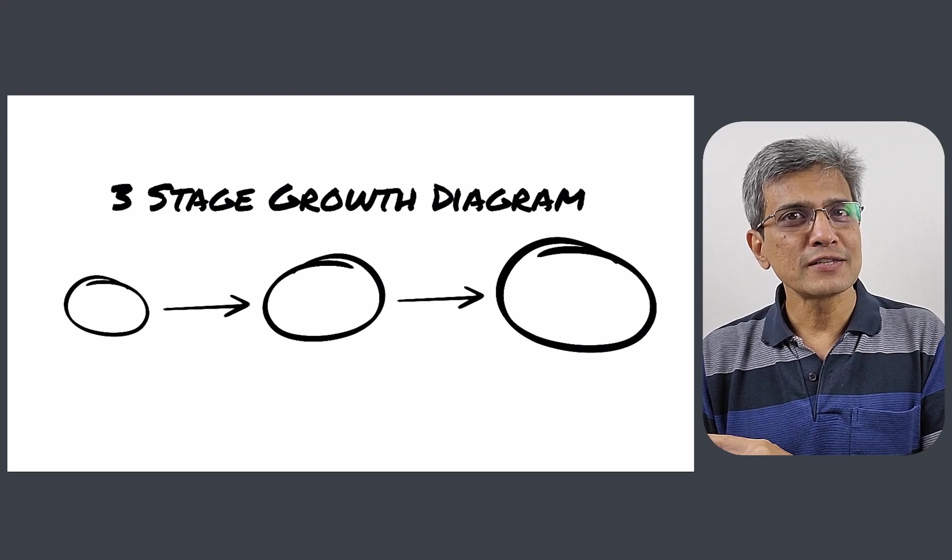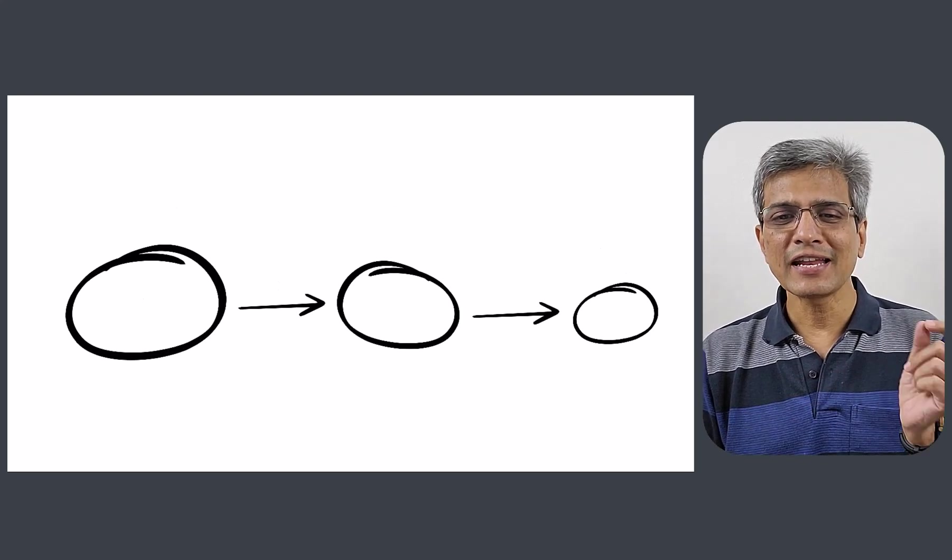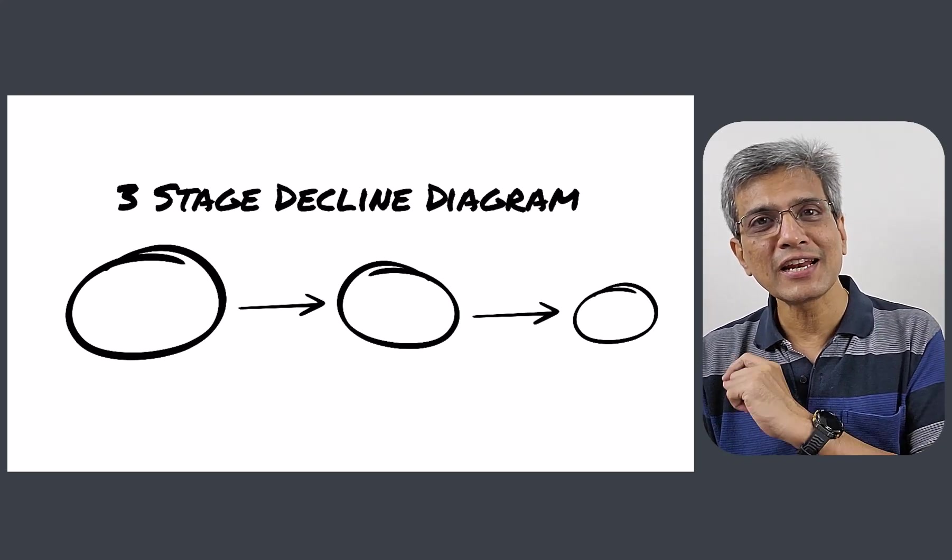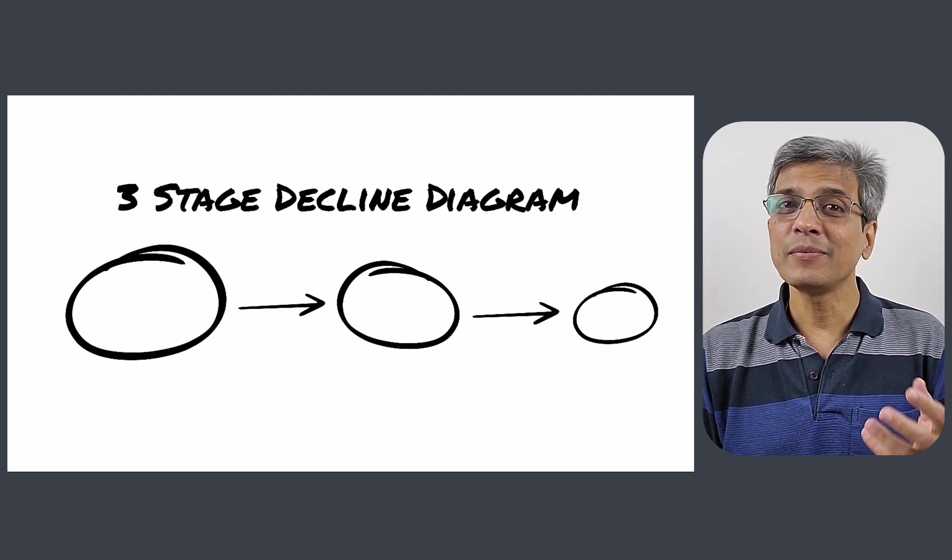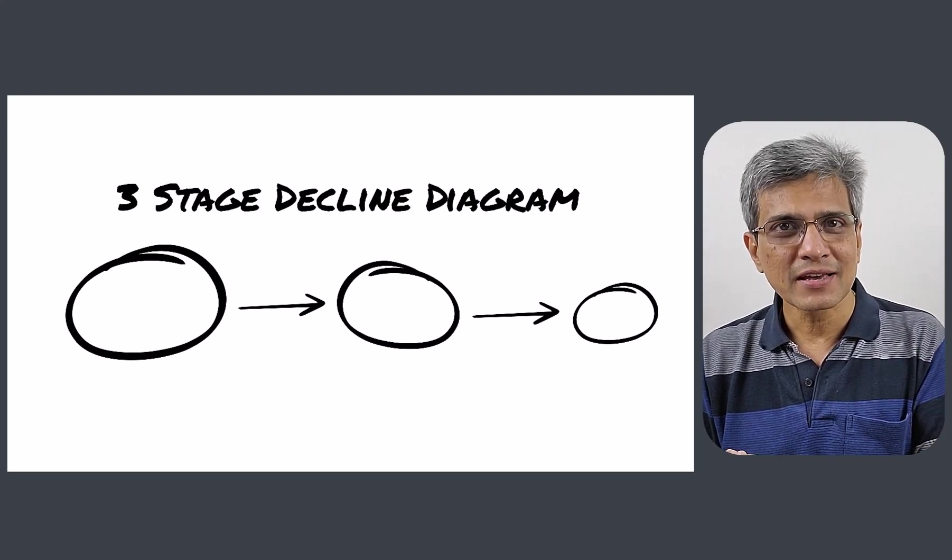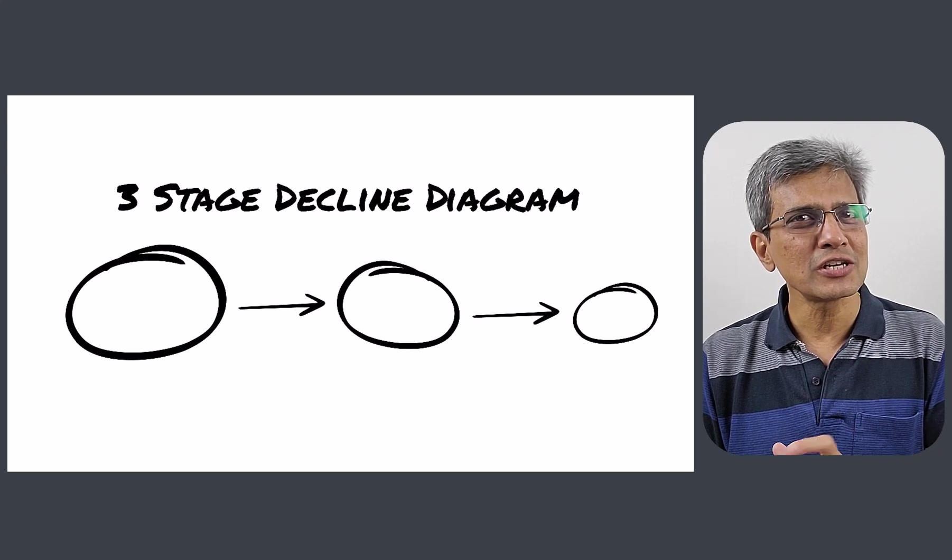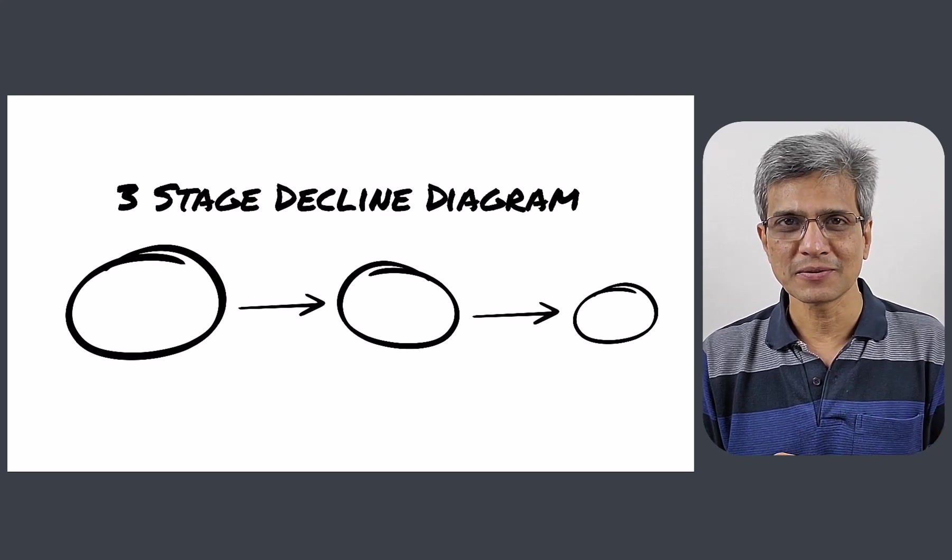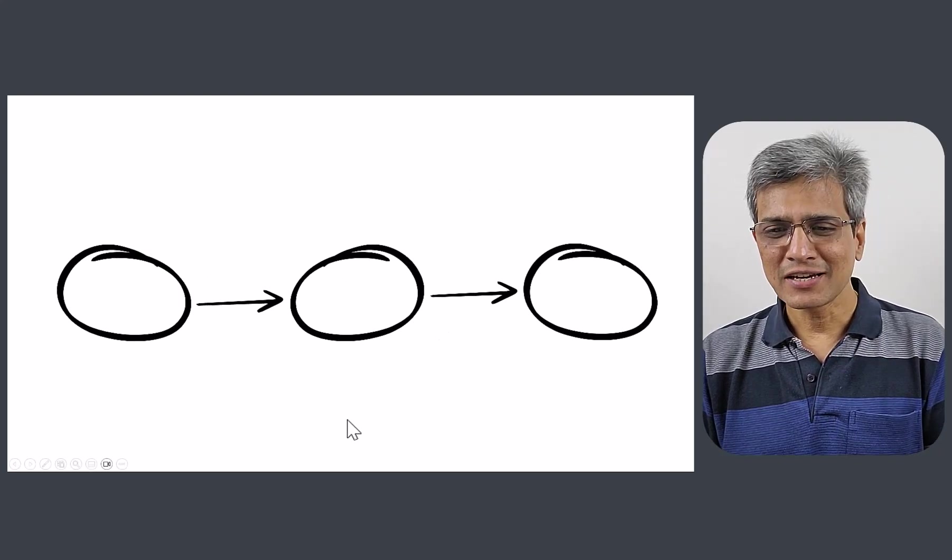Now, if I reverse the order of these circles according to their sizes, I get this beautiful three-stage decline diagram. It can be a reduction in the number of complaints or if you want to paint a grim picture, it could be even reduction in revenues.